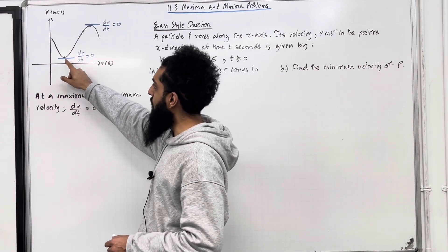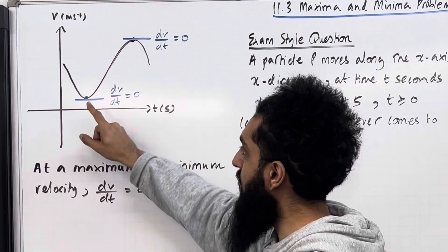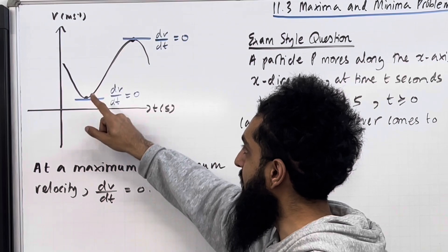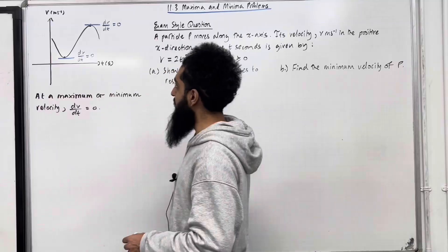We've got a local minimum here and a local maximum here. If we draw a tangent to each of these points, we can see that the gradient is 0. So at a minimum or maximum, dv/dt equals 0.